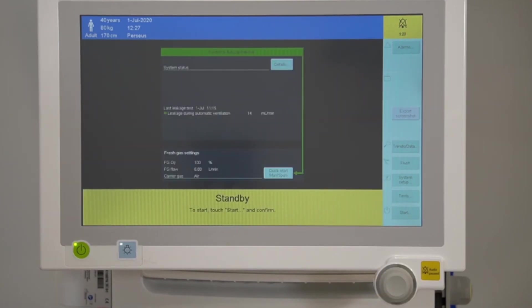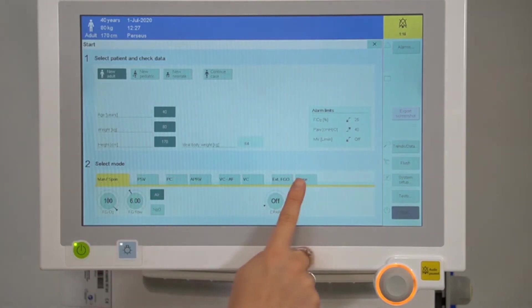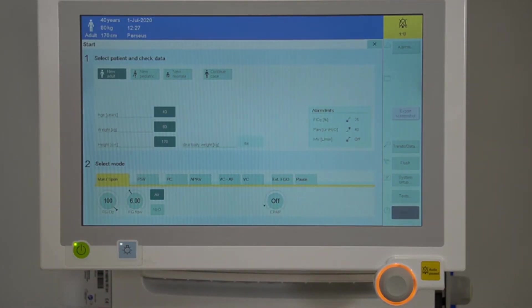The alternative use of pause is to monitor CO2. This can be done by selecting pause from the main start menu. You'll notice that the timer is defaulted to off and confirm with the rotary knob.